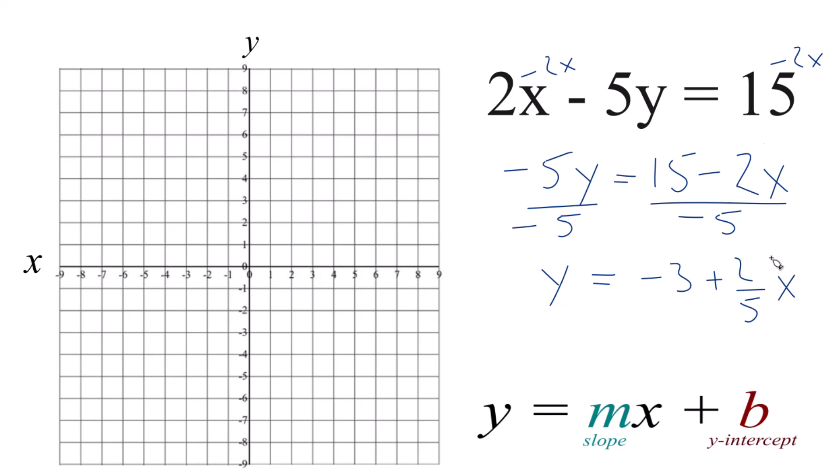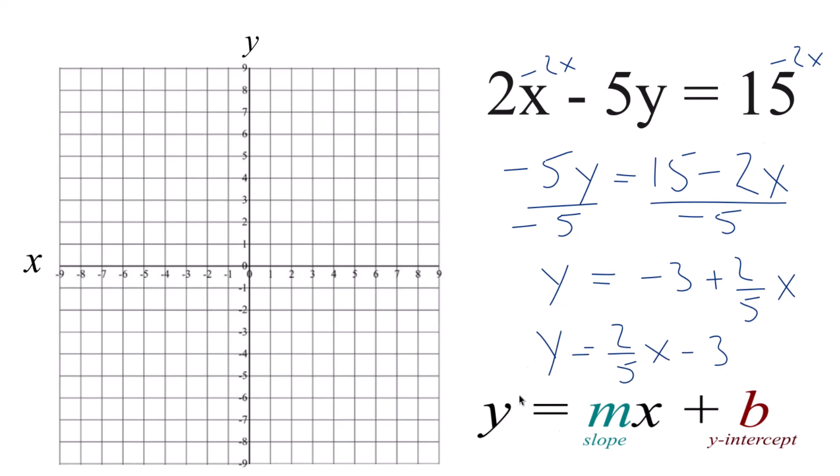Now I want to move it so the x is first, like slope-intercept form. Now it's pretty easy to graph. Negative 3, that's our y-intercept here. So we go down, right there is where we intercept the y-axis.